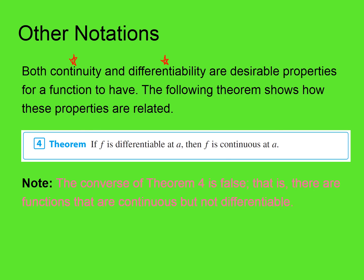The converse — if continuous, then differentiable — would be the if-then in the other sense. It's not true that if you could graph it without lifting your pencil, then it's smooth at a number a. The problem we just did is exhibit A — that's the most common example showing the converse of 'if differentiable then continuous' is false. Because if we let a be zero, it's continuous but it's not differentiable. We can graph it without lifting our pencil, but it's not smooth there. There are functions that are continuous but not differentiable — for example, f of x equals absolute value of x at x equals zero.